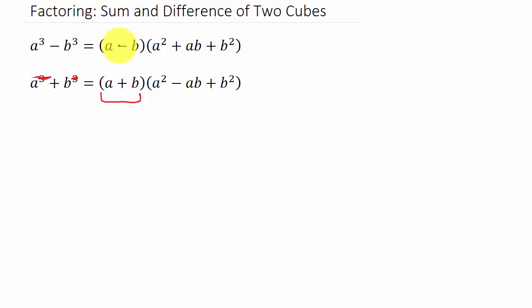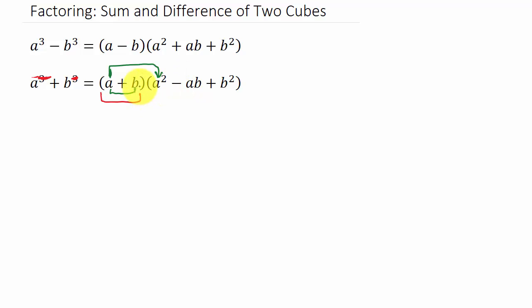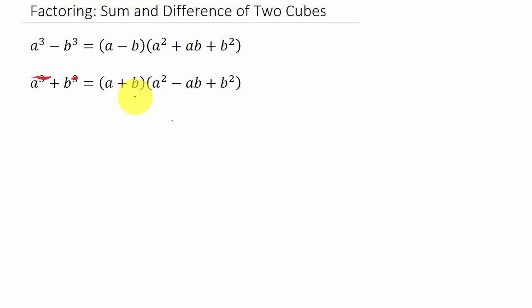Now let's see how we get the rest of it. You take this first term and square it, then you change the sign. Then you multiply the two terms to get the next term, and this sign back here is always positive — you can see that in both formulas. Then you square the last term. So: square, change the sign, multiply, always positive, square the last one.